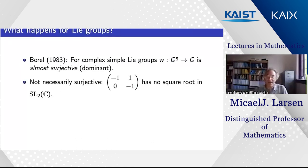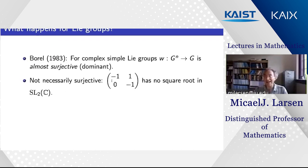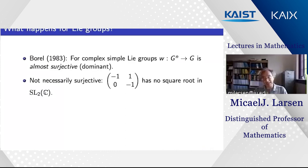What makes this interesting is that although the image is almost all of G, it need not be all of G. For example, take n=1, G=SL₂(ℂ), and the squaring map w(x)=x². The matrix [[-1,1],[0,-1]] has no square root in SL₂(ℂ): its eigenvalues are both −1, so any square root would have eigenvalues ±i, meaning the square root must be diagonalizable — but this matrix is not, so its square cannot be diagonalizable. This shows the map is not always surjective.